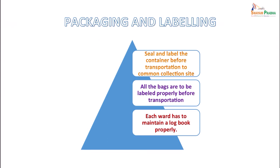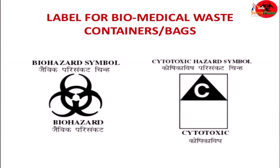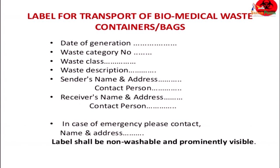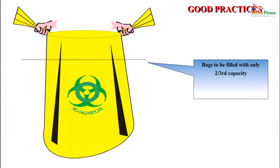For packaging and labeling, seal and label the container before transportation to the common collection site. All bags are to be labeled properly before transportation, and each ward must maintain a log book of how many packages were collected and sent. Containers and bags should bear the biomedical waste label along with a biohazard or cytotoxic hazard symbol. For transport, labels should include date of generation, waste category, waste class, description of waste, sender's name and address, receiver's name and address, and an emergency contact. Labels should be non-washable and prominently visible. Bags should be filled to only two-thirds capacity so they can be tied from the top.